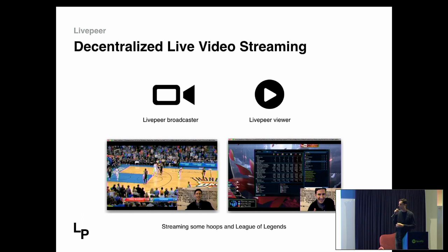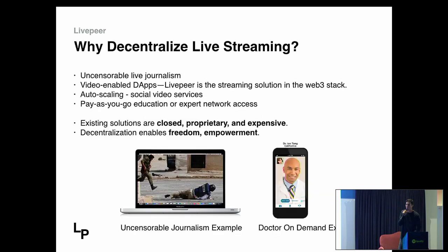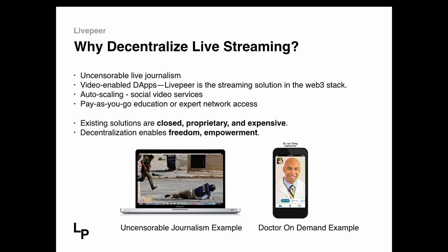It really gives you the freedom to distribute video using this network of infrastructure. So why would we do that? What's the point of decentralizing live streaming? In the decentralized stack, we have layers for payments with Bitcoin and Ethereum, a layer for storage like Filecoin, Swarm, and IPFS, and layers for identity and naming. There's no layer for live media yet, and that's really what we're building — the infrastructure layer to power all of that.